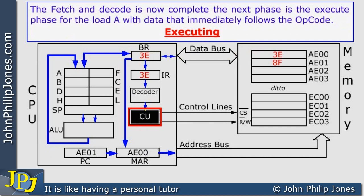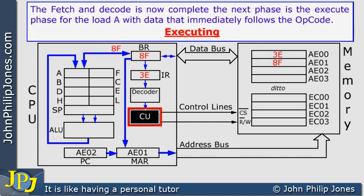The contents of the memory address register are then transferred to the address bus, while the control lines are both put to a low voltage level. This results in memory location AE01 being selected, and the contents — 8F — are transferred via the data bus to the buffer register, and from there to register A, because that is what the instruction is doing: transferring a binary pattern in memory to register A. We can see the program counter being incremented, the address and pulses, the 8F coming into the buffer register, and then going to A.